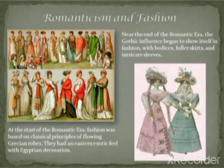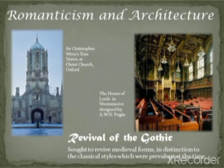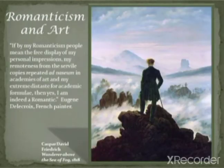Towards the end of the Romantic era the style changed. In architecture, the Gothic style was revived during this period — they sought to revive medieval forms in distinction to the classical styles prevalent at that time. Enormous pillars and domes became popular. In painting, we again find the influence of Romanticism.